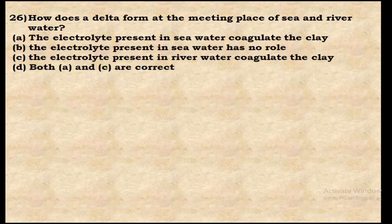Question 26: How does a delta form at the meeting place of sea and river water? The electrolytes present in sea water coagulate the clay, and the electrolytes present in river water also coagulate the clay. Both sea water and river water contribute to coagulation. Option D (both A and B are correct) is the right answer.